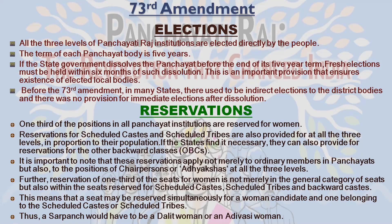There is also mandatory reservation of one-third of all seats in all panchayats at all levels for women, with this reservation for women applying to the seats reserved for Dalits and Adivasis as well. This means that one-third of seats are reserved for women, and this one-third reservation applies within the Scheduled Caste, Scheduled Tribe, and backward caste categories for women too. So a seat may be reserved simultaneously for a woman candidate belonging to the Scheduled Caste or Scheduled Tribe — thus a sarpanch would have to be a Dalit woman or an Adivasi woman.